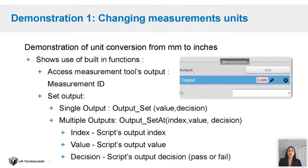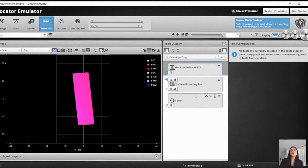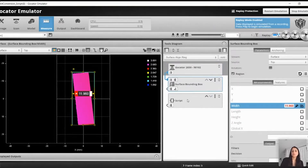Now we will go over our first example, which is a very basic one. In this example, we will go over a basic script that shows how you can perform an arithmetic operation on a measurement output from one of the measurement tools. I'll be quickly switching to the emulator to demo this example. As you can see, we have already gotten some scans — scans of a box. We have gathered five scans of five different boxes, and we will be showing how the script tool can be used for that.